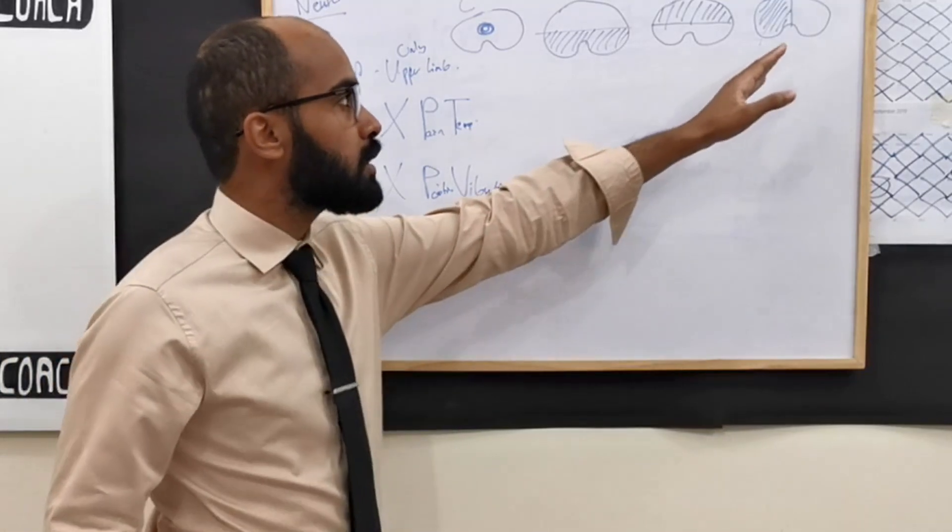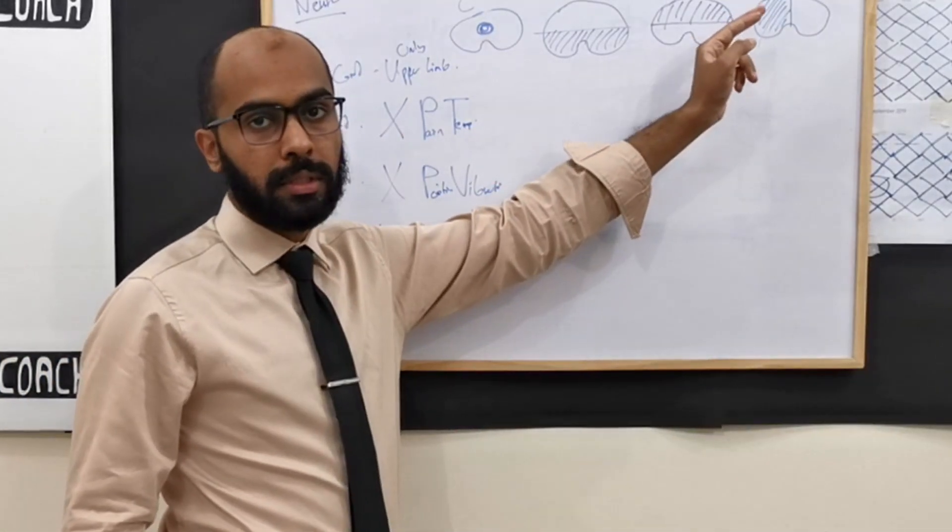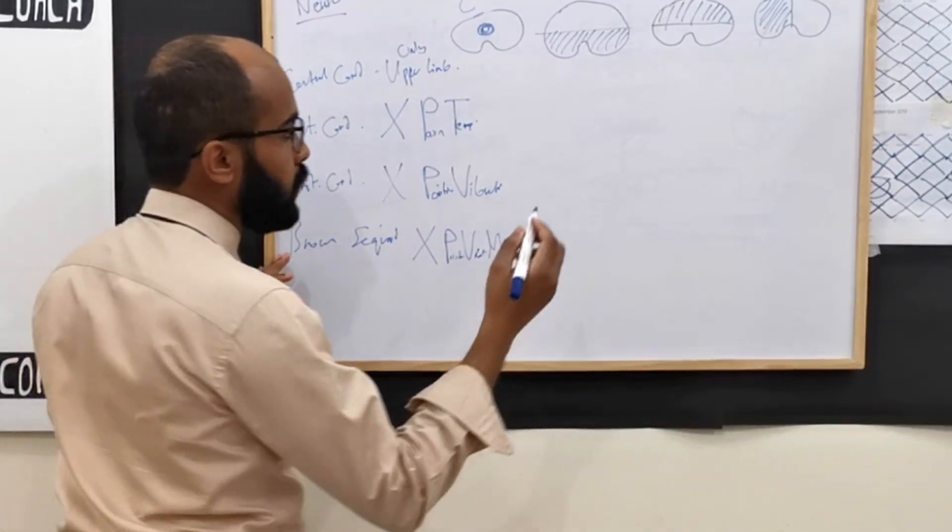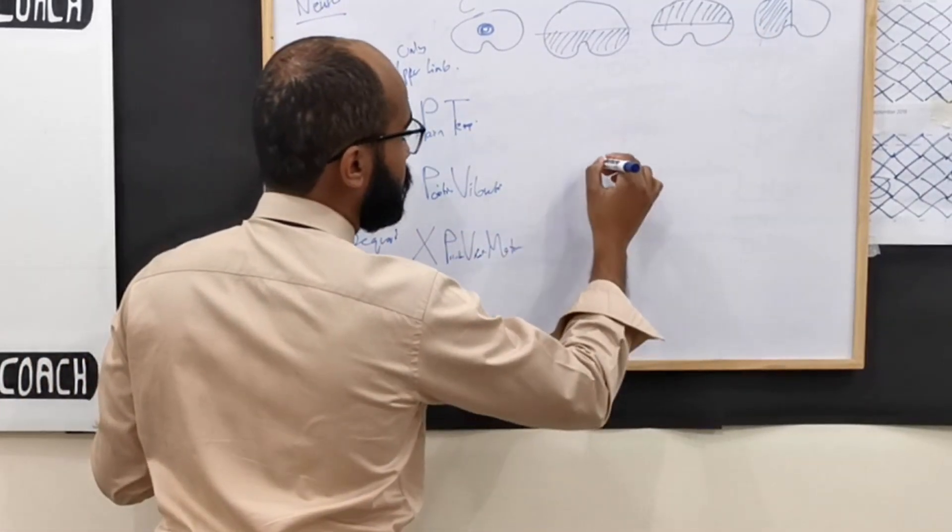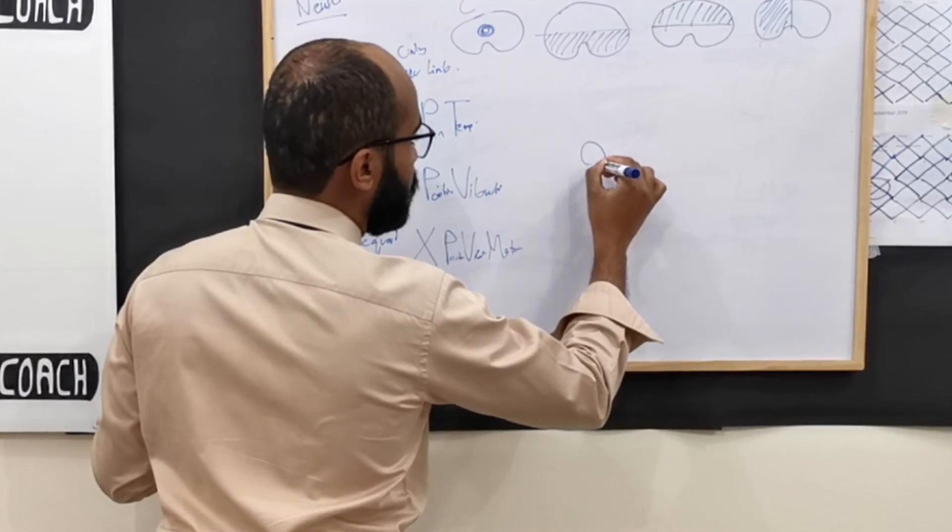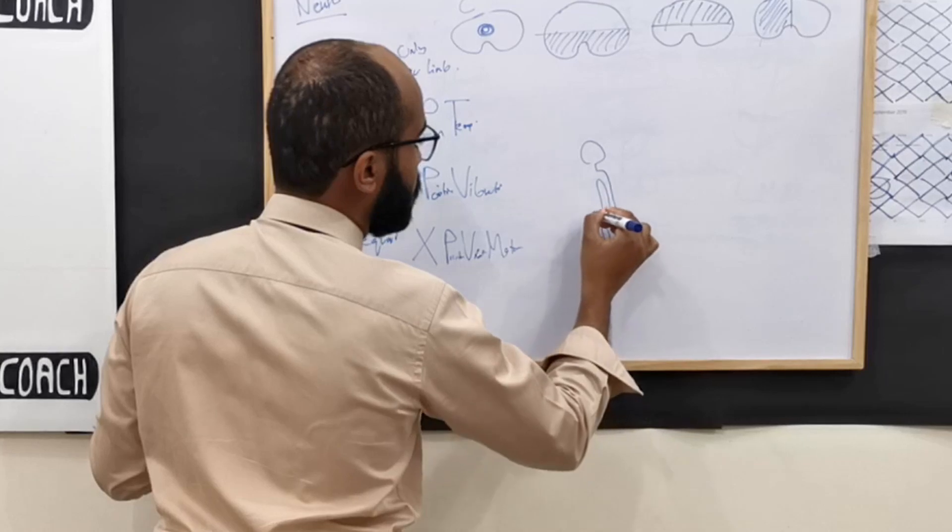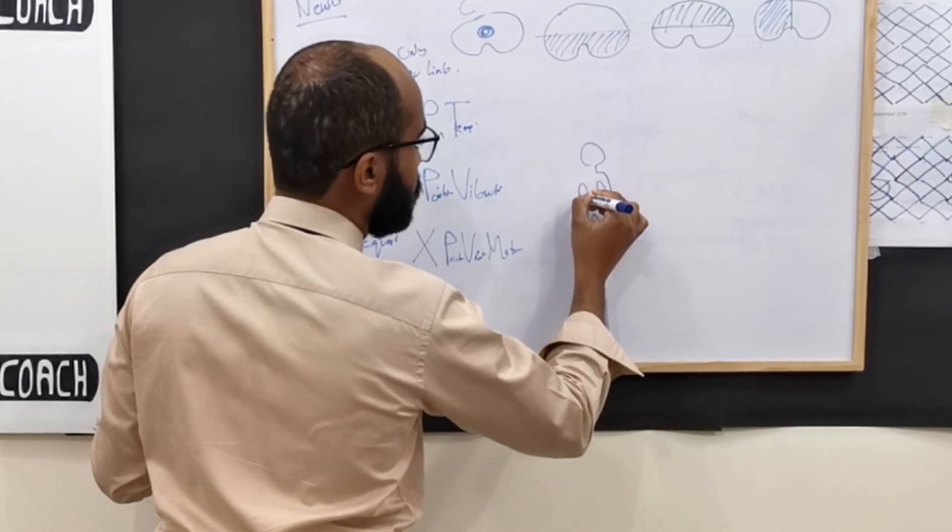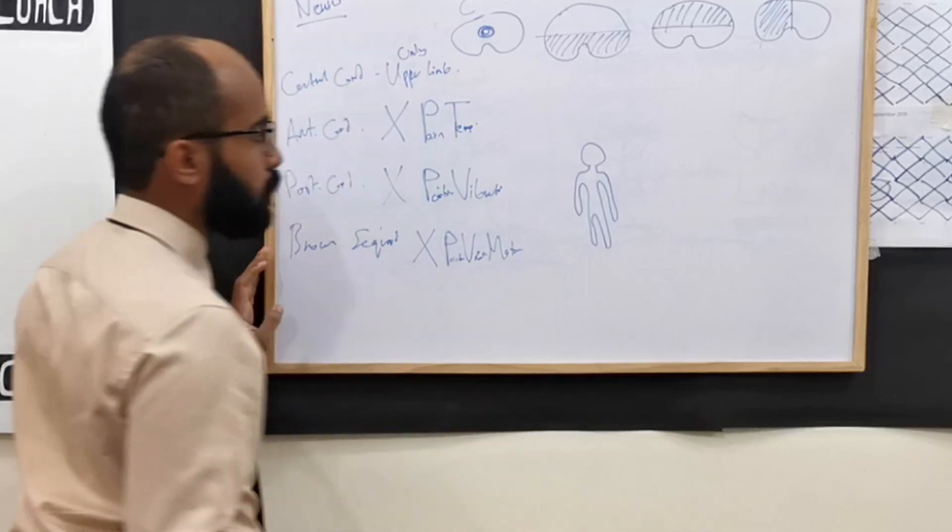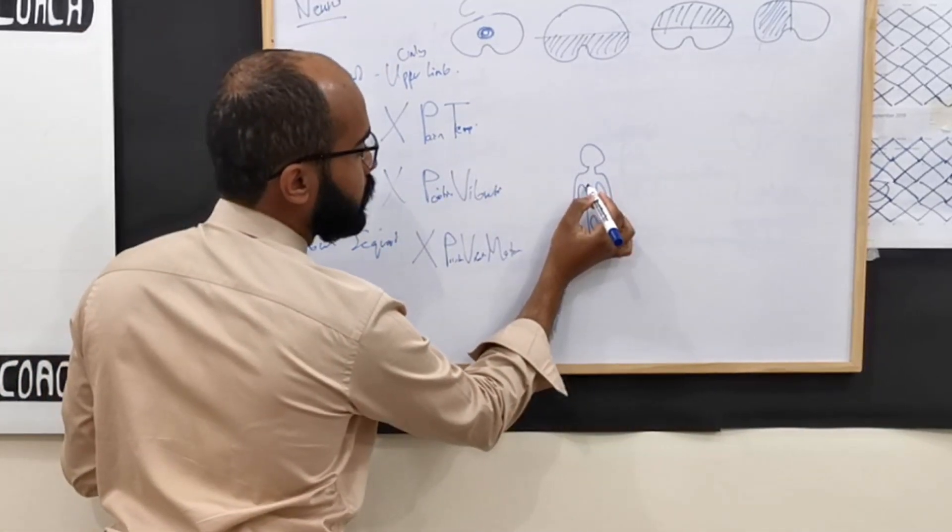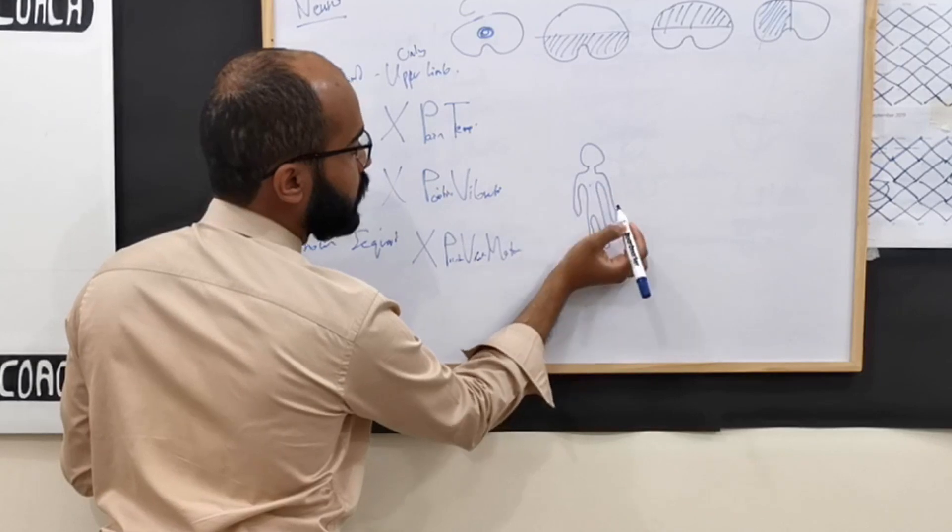But because a lot of nerves cross, they cross two levels below. Let me, I'm just going to draw. We're doing okay. So suppose the injury is at this level, right here.